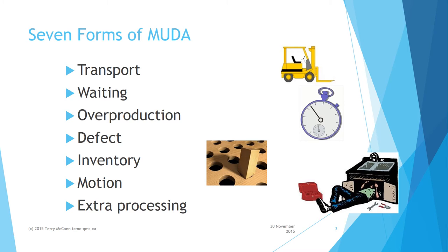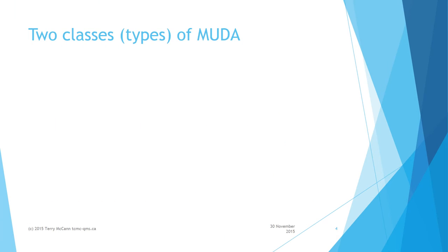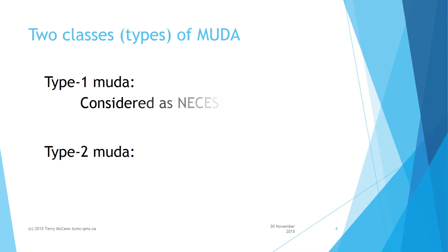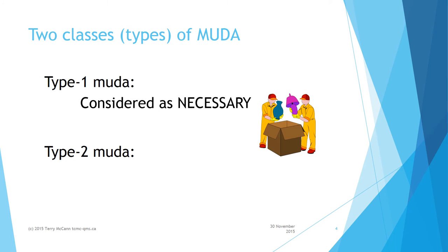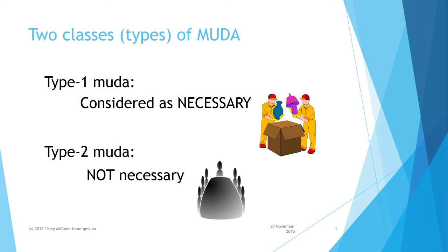Extra processing: over-processing that does not in itself add value through transformation — such as adding protective packaging, or cleaning molds and castings. Your alarm bells are probably ringing: how can protective packaging be a waste? The customer would be very upset if goods arrived damaged. For this reason there are two classes of muda. Type 1 muda classifies activities that do not add value but are considered necessary — this type cannot be eliminated immediately; protective packaging is one example. Type 2 muda is activities that do not add value and are not necessary — these are your first prospects for elimination, such as redundant paperwork and fruitless meetings.